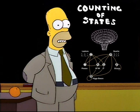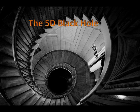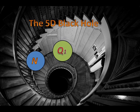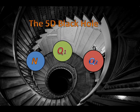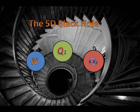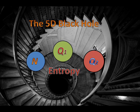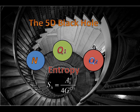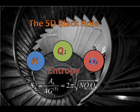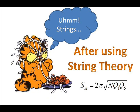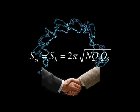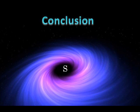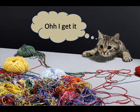The simplest one is the extremal five-dimensional black hole, which carries three different electric charges with respect to the effective spacetime M5. This entropy is given by the Bekenstein-Hawking formula. And after using string theory, we find that the string entropy agrees with our previous calculations. Therefore, the statistical derivation of the black hole entropy is a significant accomplishment of string theory.